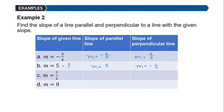If the given slope is 7/2, then the slope of a parallel line is also 7/2. For the perpendicular line, take the opposite sign (negative) and flip the fraction to get negative 2/7.